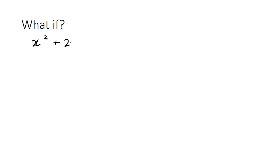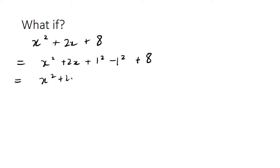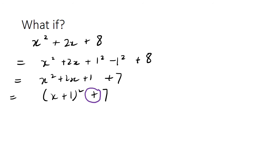As a final example — a 'what if' case — what happens with x² plus 2x plus 8? Carrying through the same process: halving the coefficient of x gives 1, so we get x² plus 2x plus 1, then minus 1 plus 8, giving us (x+1)² plus 7. The issue here is that we do not and cannot have a difference of squares because we've got a positive number. In that case we say: cannot be factorized any further.